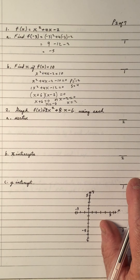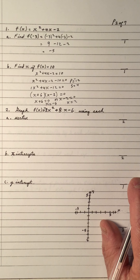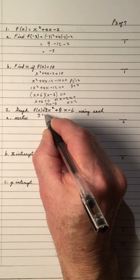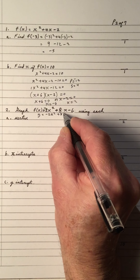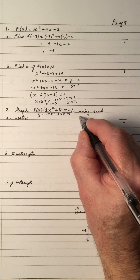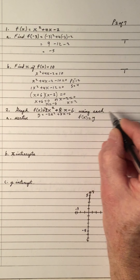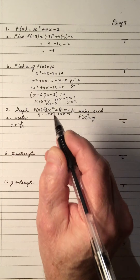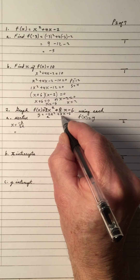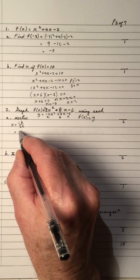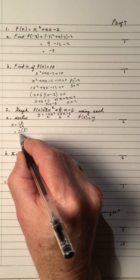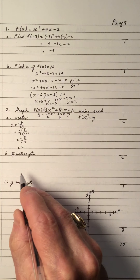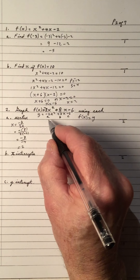Number 2: graph f(x) equals negative 2x squared plus 8x minus 6. You can change f(x) to y. To find the vertex, use x equals negative b over 2a. Here a is negative 2, b is 8, c is negative 6. So that's negative 8 over 2 times negative 2, which is negative 8 over negative 4. The x-coordinate of the vertex is 2.